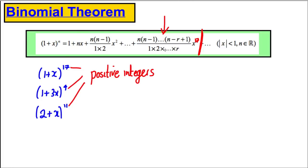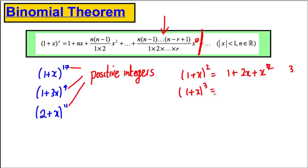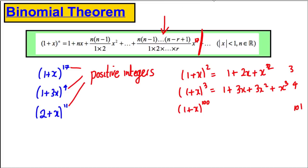Having a positive integer meant that the terms of the expansion were finite — there were only so many of them. For example, 1 plus x squared is 1 plus 2x plus x squared: three terms, a finite sequence. And 1 plus x cubed is 1 plus 3x plus 3x squared plus x cubed: four terms. Similarly, something where n is a positive integer like 100 will have 101 terms and then stop.